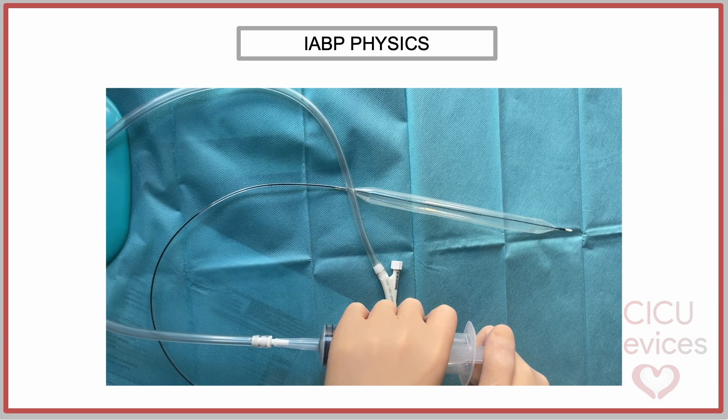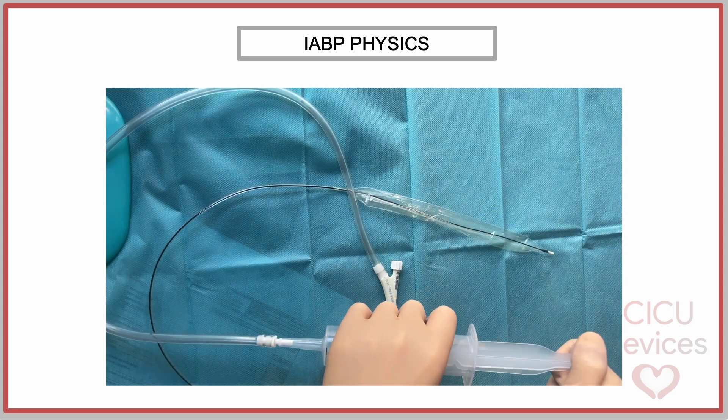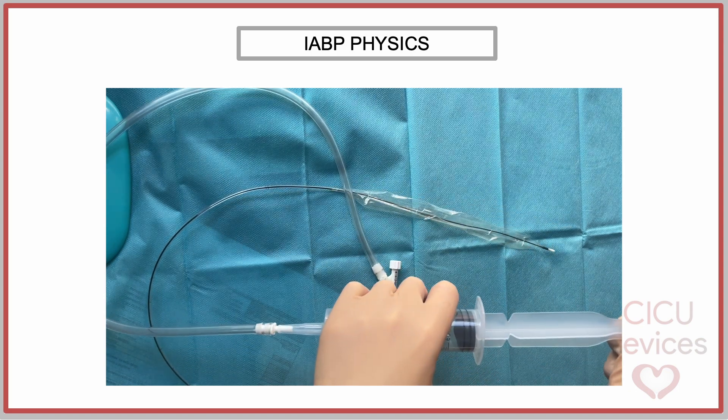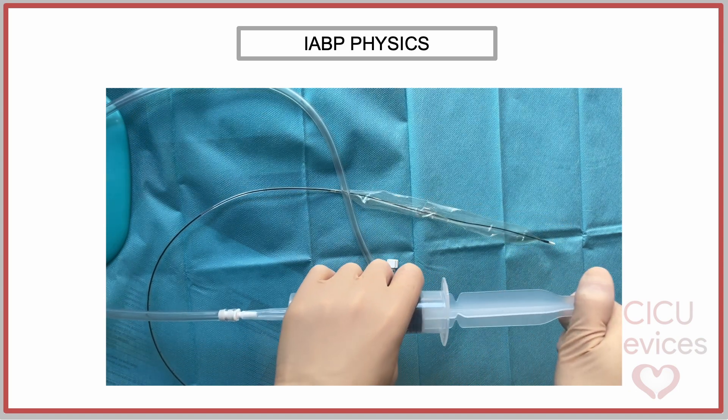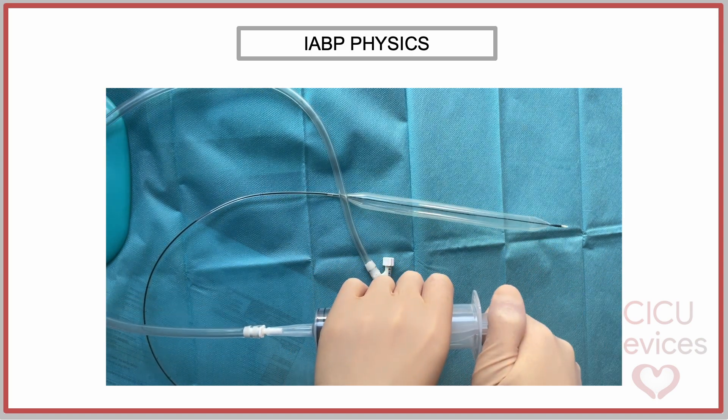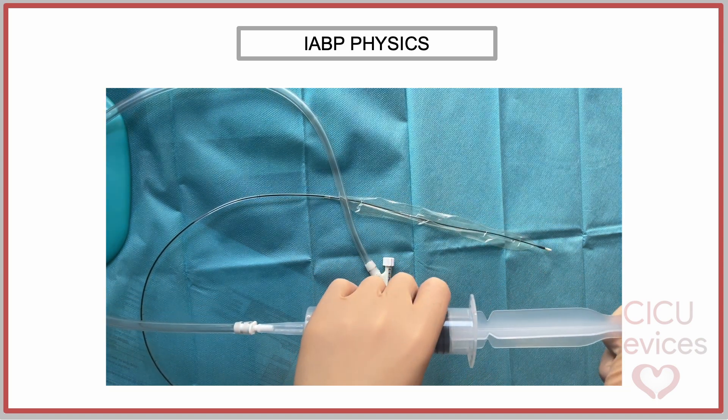We can reproduce this operation ex vivo using a syringe connected to the helium port. When we push the syringe plunger, we can see how air is introduced into the catheter, inflating the balloon, while pulling the plunger causes the air to be sucked out of the catheter, and the balloon deflates.